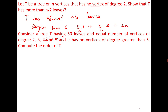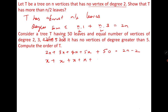Consider a tree with 50 leaves and an equal number x of vertices of each degree 2, 3, 4, and 5, and no vertices of degree greater than 5. To find the order of T, we use the degree-sum formula for trees. Setting up: 2x + 3x + 4x + 5x + 50 = N gives 14x + 50 = N, and using the tree relation 2(N−1) = degree sum, solving yields N = 82.